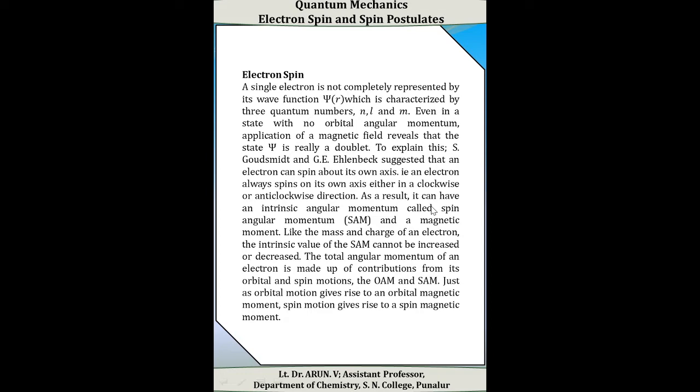Even in a state with no orbital angular momentum, the application of an electromagnetic field reveals that this is a doublet. To explain the occurrence of the doublet, Gerlach, Smith, and Uhlenbeck suggested that an electron can spin on its own axis — either in the clockwise direction or in the anti-clockwise direction — and this is called the spinning motion of the electron.